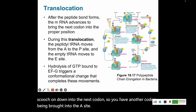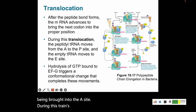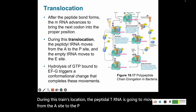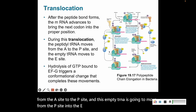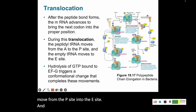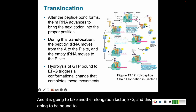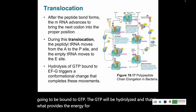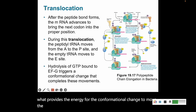During translocation, the peptidyl tRNA moves from the A-site to the P-site, and the empty tRNA moves from the P-site into the E-site. This requires another elongation factor, EFG, bound to GTP. The GTP is hydrolyzed, and that provides the energy for the conformational change to move the tRNAs down to the next site.